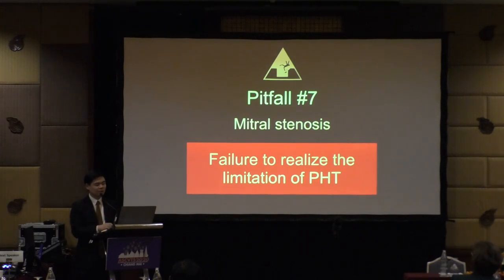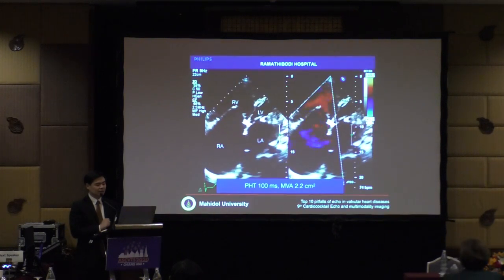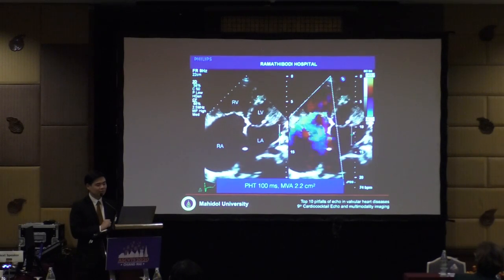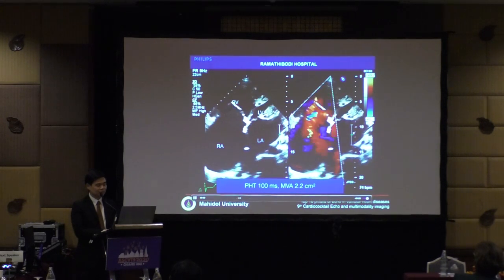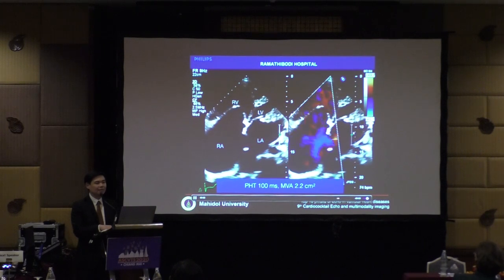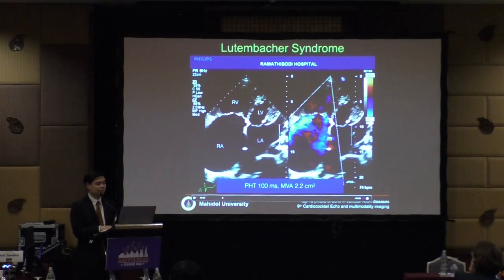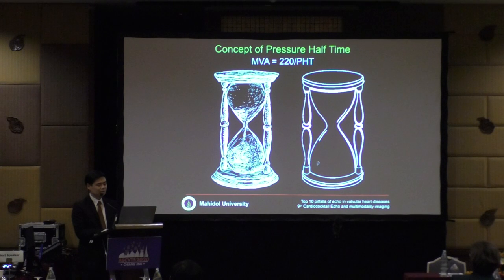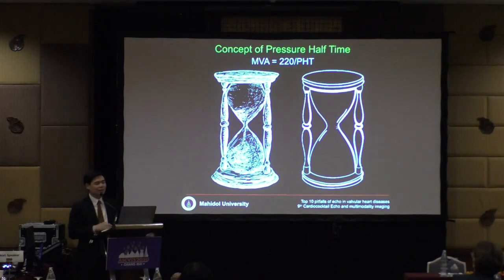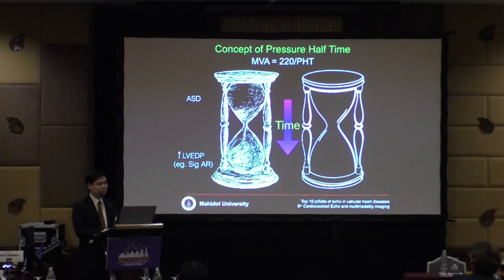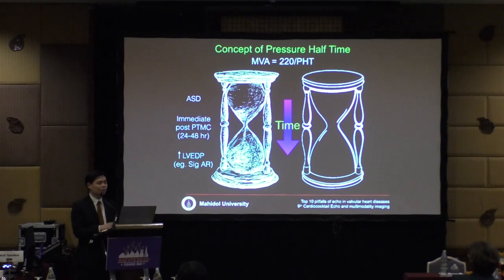Pitfall number seven in mitral stenosis: failure to recognize the limitations of the pressure half-time method. A fellow calculated mitral valve area of 2.2 cm² without recognizing significant ASD with left-to-right shunt — Lutembacher syndrome. The pressure half-time concept is like a sand clock: limited area means longer fill time, but ASD leaks upper chamber pressure, making the method inaccurate. Other limitations: elevated LVEDP such as significant AR, or immediate post-PTMC within 24–48 hours.